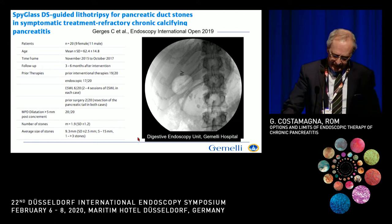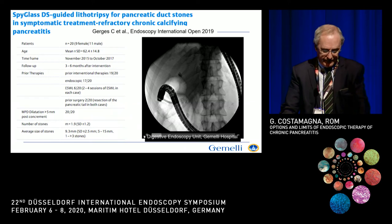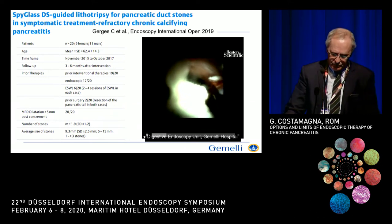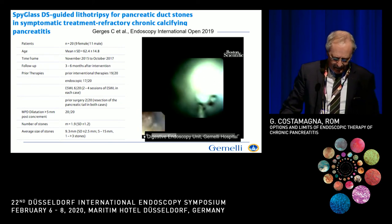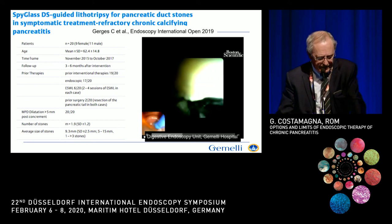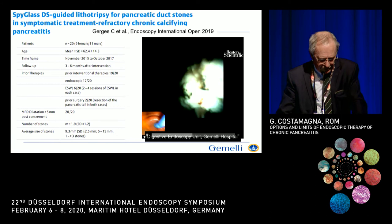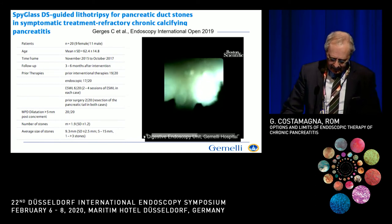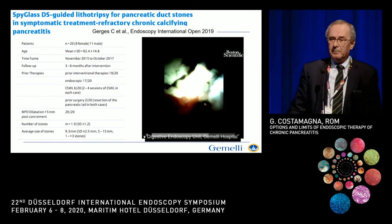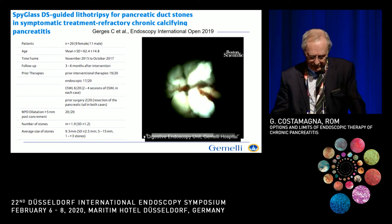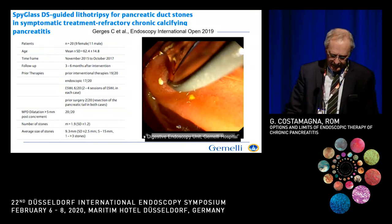If ESWL fails, there is another way to get rid of the stones: laser or electro-hydraulic lithotripsy under pancreatoscopic control, in this case with the SpyGlass. This experience was published last year by the group from Düsseldorf by Christian Gerges — 20 patients with failed previous ESWL and two with prior surgery. This technique was quite effective in breaking stones under vision, provided the stone is not impacted in a severe stricture. If you can reach the stone, this is a very elegant technique that is successful almost always.